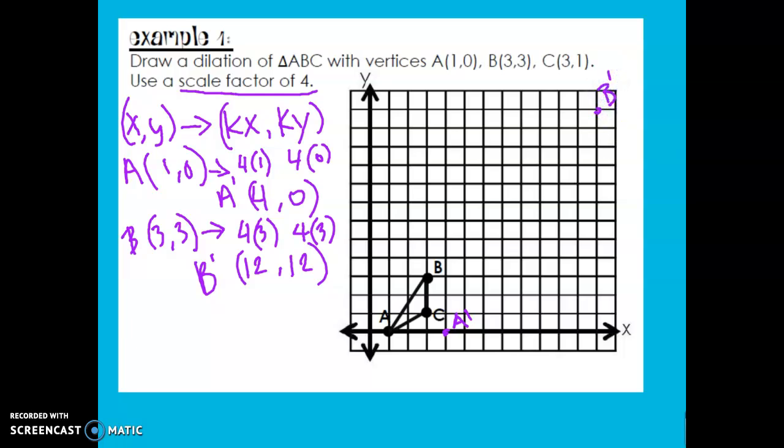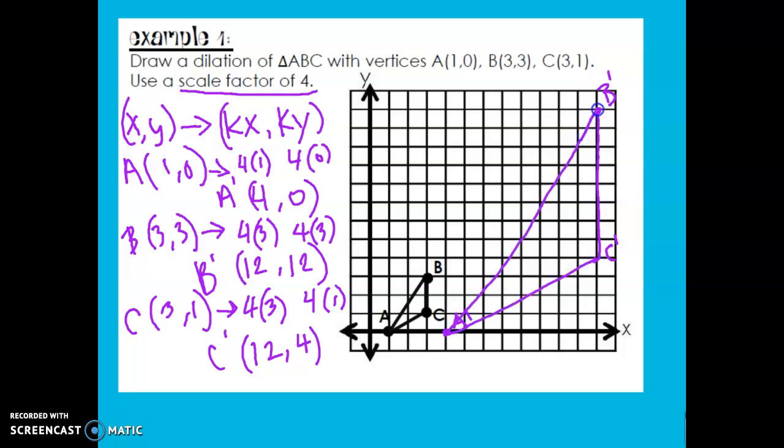So you can see this shape is going to be much, much bigger than this original shape. C started at (3, 1). And then we multiply each one by our k, our scale factor. And 4 times 3 is 12, and 4 times 1 is 4. So our C prime is at (12, 4). If I connect the dots, I can see my new triangle, and it is much larger than the first.